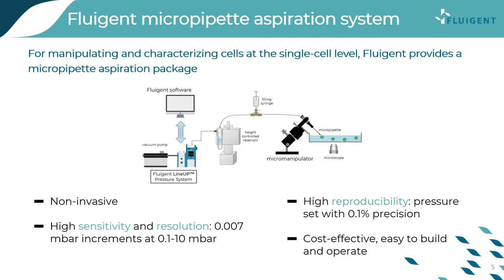This method also allows for high reproducibility. Manual aspiration causes variability between operators because applied pressures cannot be quantified exactly. In contrast, using pressure controllers, we can deliver a set pressure with excellent precision. It is also a cost-effective method that is easy to build and operate. This package is compact, fits any microscope and micropipettes, and is controlled by intuitive software.